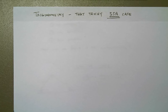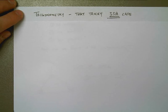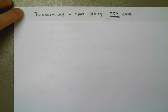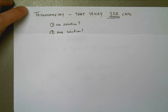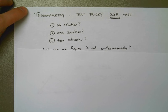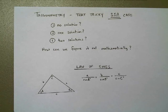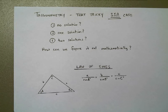When we talk about the SSA case, the reason it's tricky is because if you are given two sides and then an angle that's not between them — a side, a side, and then an angle — there can be no solution, there can be one solution, or there can be two solutions. The question is how can we figure this out mathematically? The answer is by using the law of sines, which is one way to figure out whether we have one, two, or no solutions for a triangle.